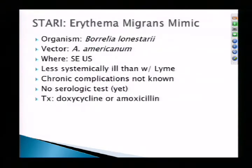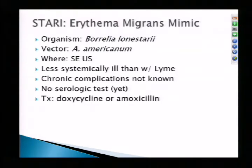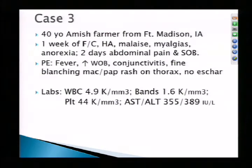Briefly, STARI — Southern Tick-Associated Rash Illness — is an erythema migrans mimic. The organism has been named Borrelia lonestarii. The vector is an Amblyomma tick, not Ixodes, and it is found in the southeast U.S. Patients can have an erythema migrans rash virtually identical to Lyme disease, but are often less systemically ill. Chronic complications are not known, there are no serologic tests yet, and treatment is doxycycline or amoxicillin. If you see someone from Missouri or southern Iowa with what looks like erythema migrans but negative Lyme serology, STARI could be the reason.